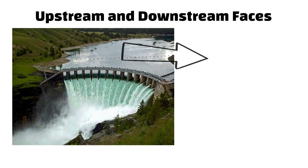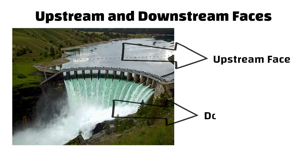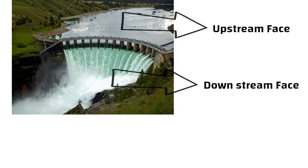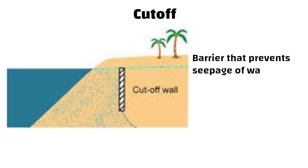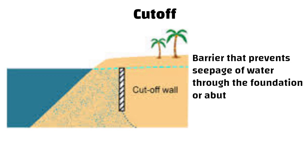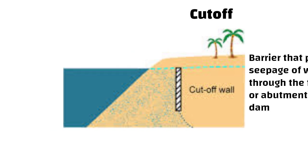Upstream and downstream faces. In this picture, you can see the upstream and downstream face of the dam. Cut-off. Cut-off wall is the barrier that prevents seepage of water through the foundation or abutments of the dam.